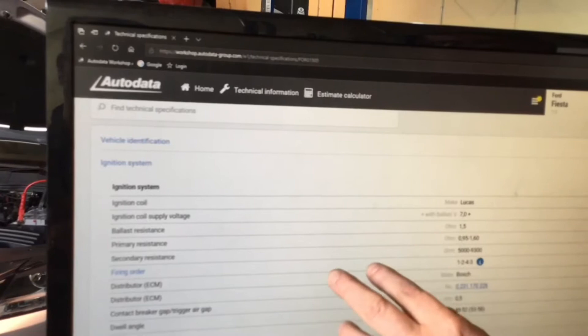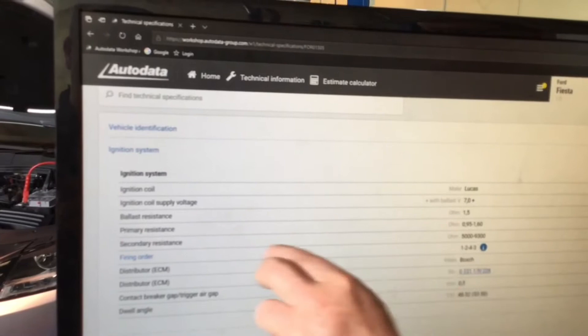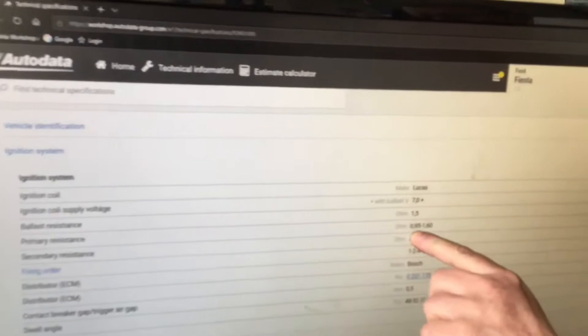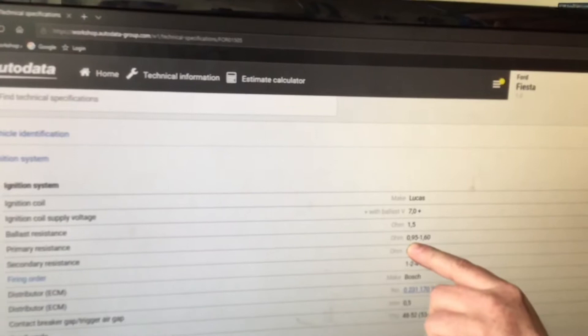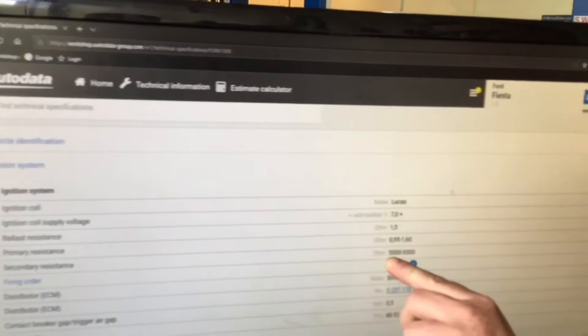So remember, we had a ballast resistor fitted on this system - 12 volts before the ballast and then about 7 volts after the ballast supply find the coil. It tells me the ballast resistance to check it, and this is what we're after here: the primary resistance. If we come across here, it's going to tell us that the primary resistance is anywhere between 0.95 of an ohm up to 1.6 of an ohm. We can see the secondary resistance then. Comes across here and it tells us anywhere from 5,000 ohms up to 9,300.